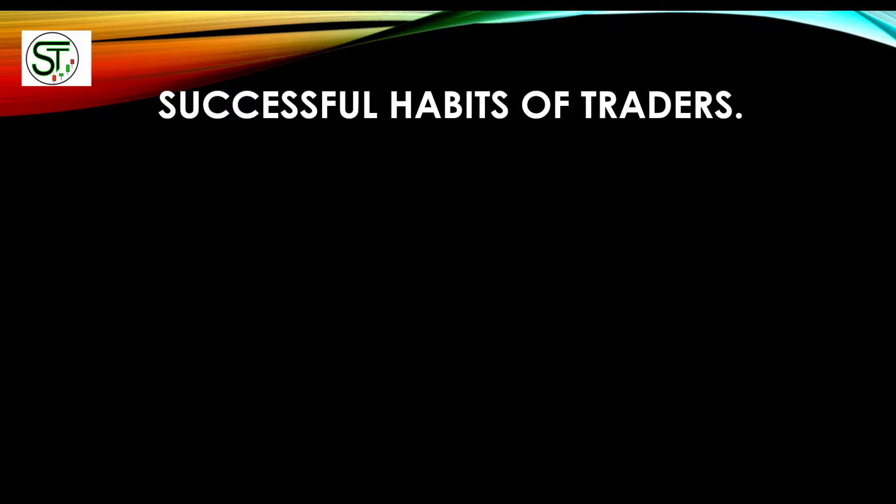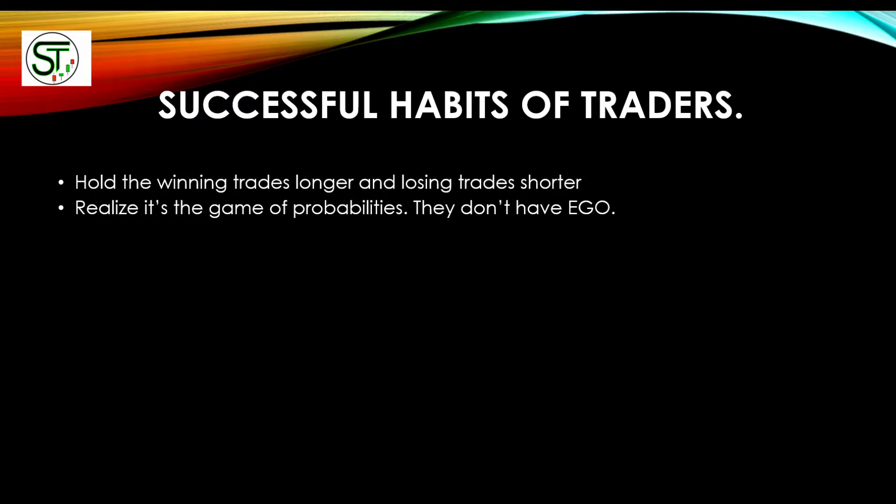Now let's talk about what successful traders do. One of the biggest habits is: when they're right, they hold winning trades longer, and when they're wrong, they cut the loss right away. When I was new, I'd do the opposite — I'd hold losing trades longer by averaging down, but take profit and get out too quickly when something went up. My losers were bigger but my winners were smaller. You want to hold winning trades longer and cut losing trades quicker.